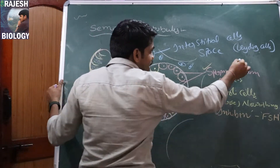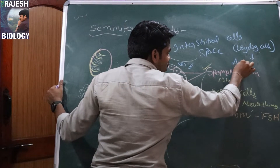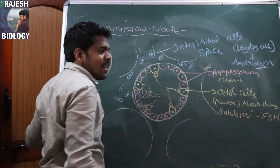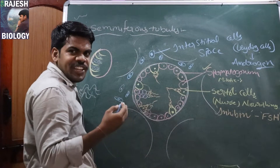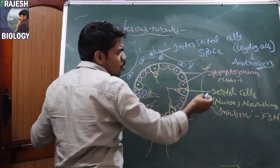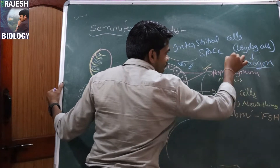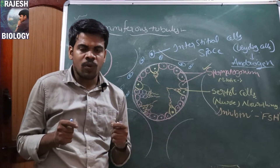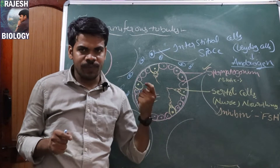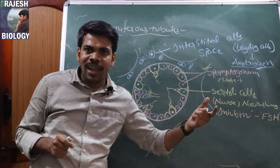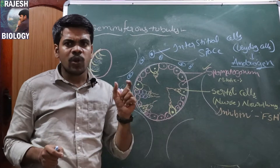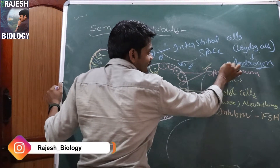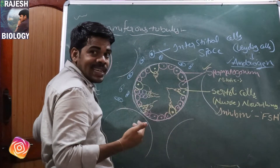Leydig cells secrete androgens. Remember — 'gen' means generating. So androgens generate male characters. 'Andro' relates to male — like in botany you hear androcium (male part) and gynaecium (female part). So Leydig cells release androgens which increase male secondary sexual characters.